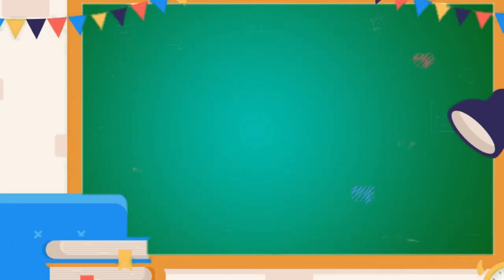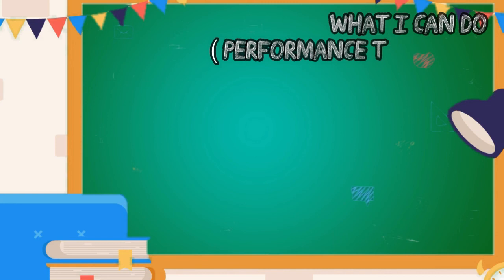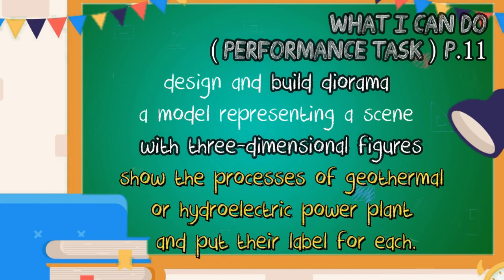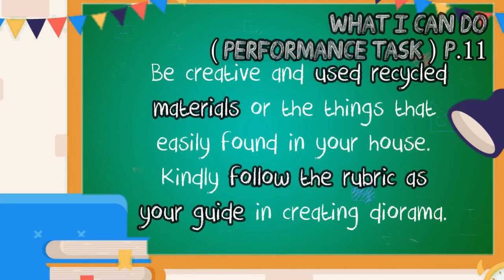For your performance task — 'What I Can Do' on page 11 — design and build a diorama: a model representing a scene with three-dimensional figures. Show the process of either a geothermal or hydroelectric power plant and label each part. Be creative and use recycled materials or things easily found in your house. Follow the rubric provided as your guide in creating the diorama. Good luck, learners!